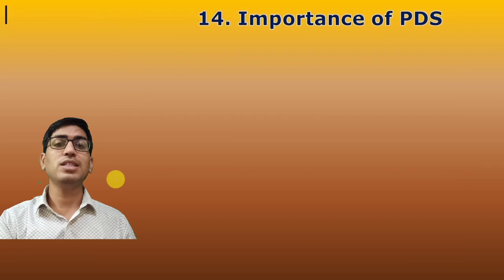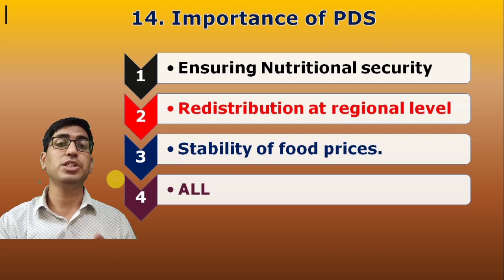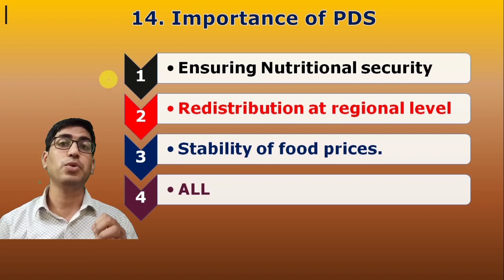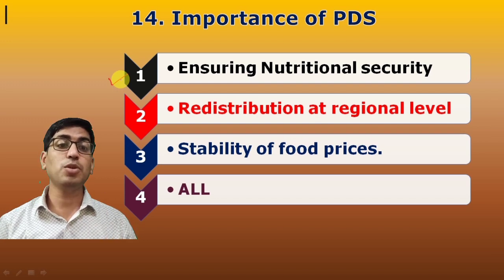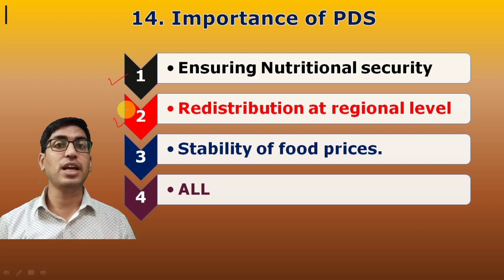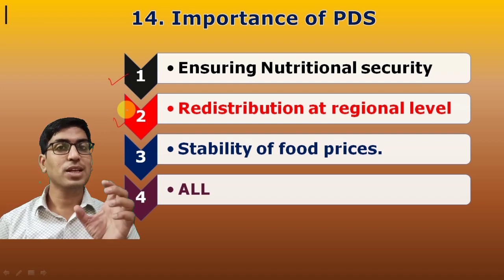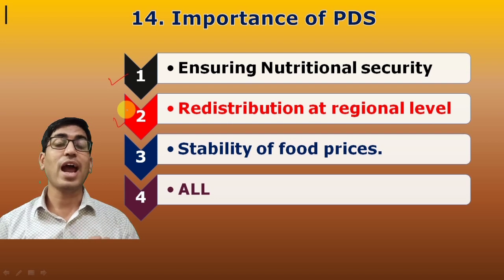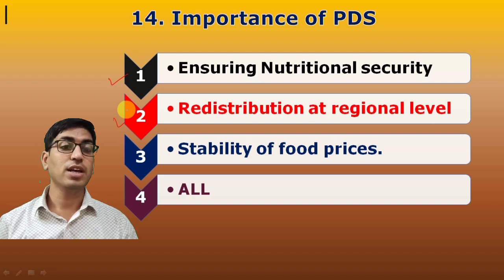Fourteenth question: Importance of PDS. Options include ensuring nutritional security, redistribution at the regional level, and stabilization of food prices. FCI procures at the procurement price, then the Center allocates to states. So the answer is All — ensuring nutritional security, regional redistribution, and stabilizing food prices are all important aspects of PDS.